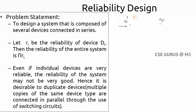Initially with no device connected, the reliability is 1 (high). When you connect one device with reliability 0.8 and cost 50, the output reliability becomes 0.8. If you then connect another device with reliability 0.7, the system reliability changes further.